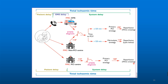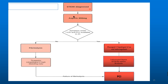For any STEMI patient, we give aspirin, and if PCI is planned, a loading dose of prasugrel or clopidogrel, plus unfractionated heparin. If the PCI center can be reached within two hours, we give aspirin, prasugrel or clopidogrel, and heparin, then send for PCI. If the PCI center is more than two hours away and symptom onset has been prolonged, we thrombolyze the patient and then send for PCI.